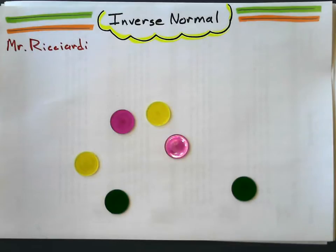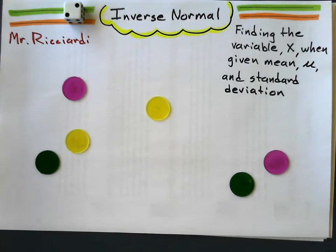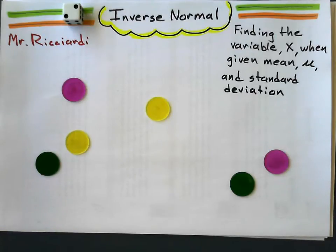Alright, in this lesson we're going to use inverse normal to solve for the random variable X when we're given the mean and standard deviation. In all our examples, the data will be normally distributed, so it will have the bell curve, and let's look at the first example here.